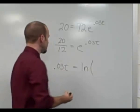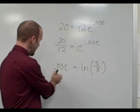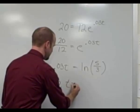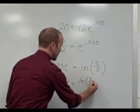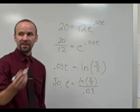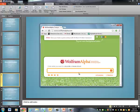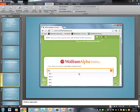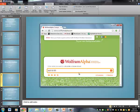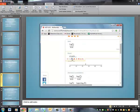We can simplify 20 twelfths to 5 thirds. Then to find the time, all I have to do is divide both sides by 3 percent. So the time equals the natural log of 5 thirds divided by 3 percent. Approximating that on the calculator gives approximately 17 years.